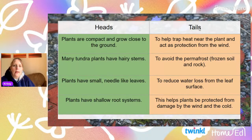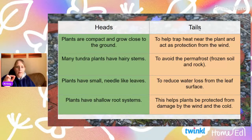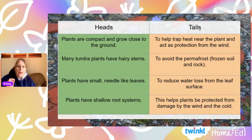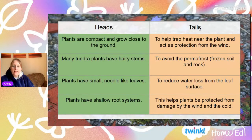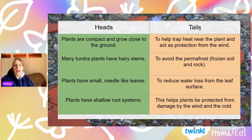These plants have adapted in various ways. They are very compact and grow really close to the ground. They actually have very hairy stems — if you go and look at any plant in the tundra, a lot of them have really hairy stems. The plants have small needle-like leaves — very different to the rainforest, where you've got really big leaves. And then the plants have really shallow roots. So we've got a heads-and-tails thing here — I've told you the things the plants have on the left, but why? Why are they compact and grow close to the ground? Why hairy stems? Why small leaves? And why shallow roots?